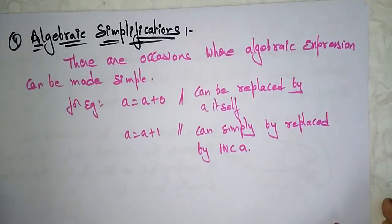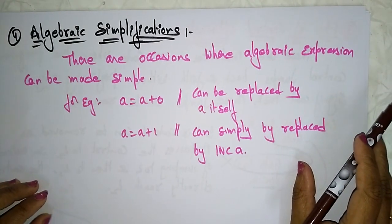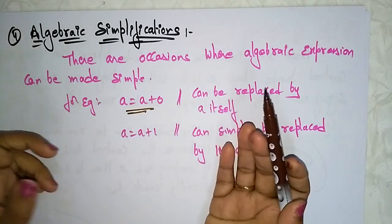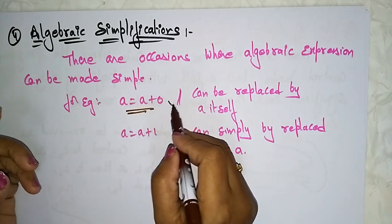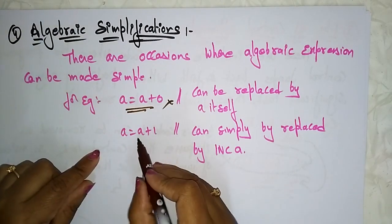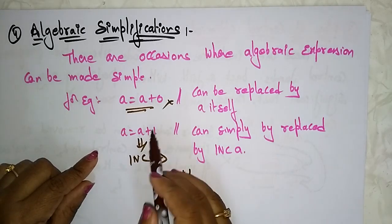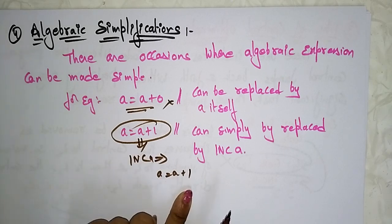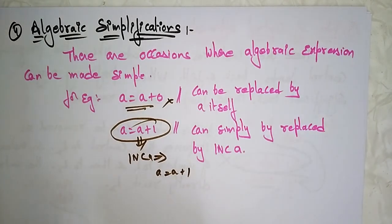The last characteristic is algebraic simplification — occasions where algebraic expressions can be simplified. For example, 'a = a + 0' is unnecessary since a equals a, so this statement can be removed. Similarly, instead of writing 'a = a + 1', it's better to write increment a (++a), because ++a means a = a + 1. These are the different characteristics of peephole optimization.